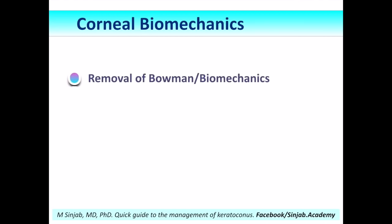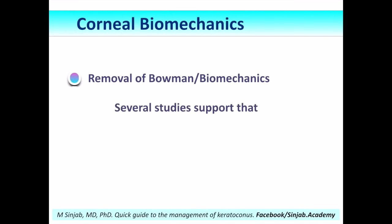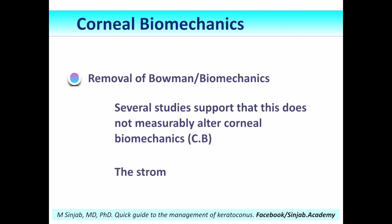Let me ask a question: if we remove Bowman's layer — just Bowman's layer — what will happen to corneal biomechanics? The three options are: they are weakened significantly, they are unchanged, or they are weakened slightly. In fact, they are unchanged. Several studies support that removing Bowman's layer does not measurably alter corneal biomechanics, because the main element that dominates corneal biomechanics is the stroma.